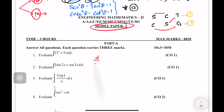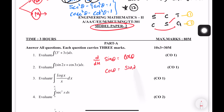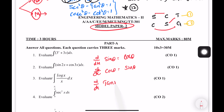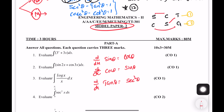d/dx of sin theta is equal to cos theta. d/dx of cos theta is equal to negative sin theta. d/dx of tan theta is equal to secant squared theta. We can write secant squared theta in this shortcut. d/dx of sec theta — if we write using the shortcut, we get two secants.